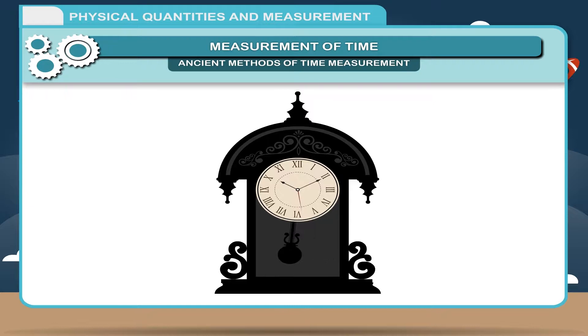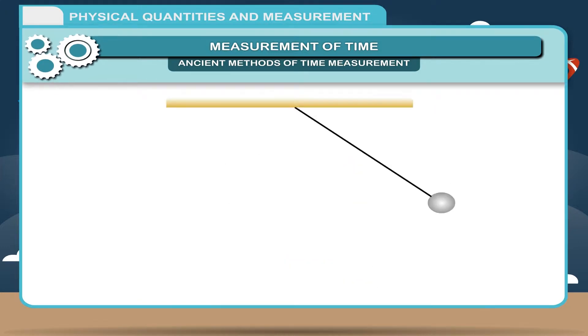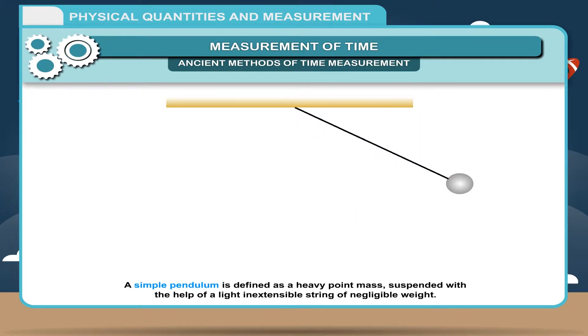This simple pendulum is an example. In a pendulum clock, time is measured by making use of the time taken by the pendulum for each oscillation. A simple pendulum is defined as a heavy point mass suspended with the help of a light inextensible string of negligible weight.